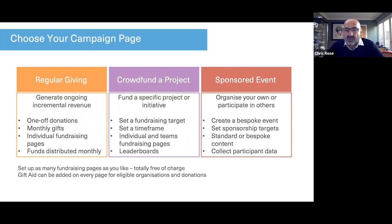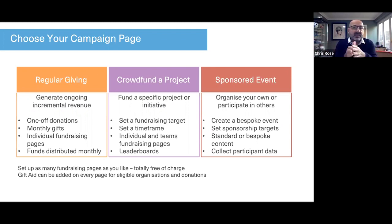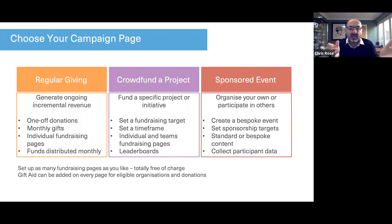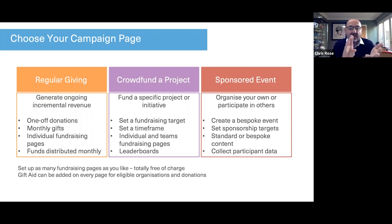The third type is a sponsored event, which we've only just introduced at the beginning of October. It's similar to a crowdfunding project page but gives you lots of configuration options. You can set start and end dates, minimum sponsorship per individual, and sponsorship targets. You can also collect your own data — for example, schools running Santa runs can configure their page to automatically collect which class a participant belongs to and what Santa suit size they need.